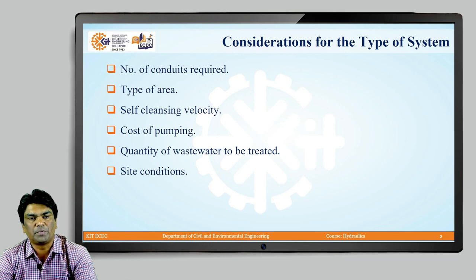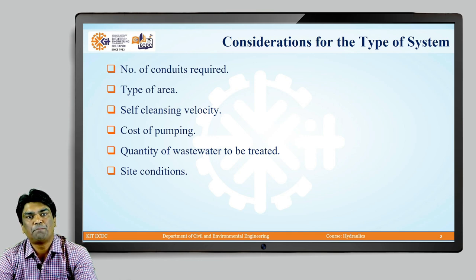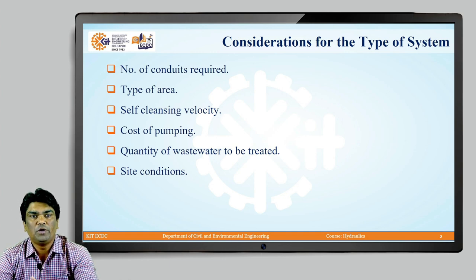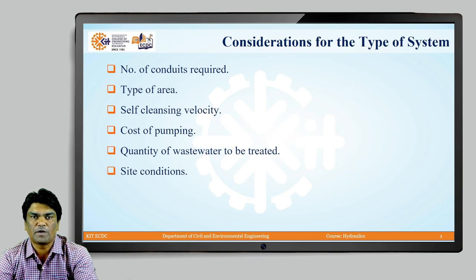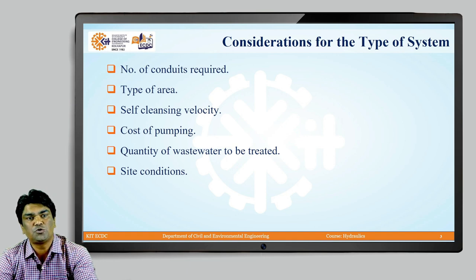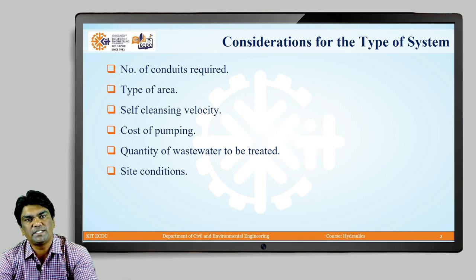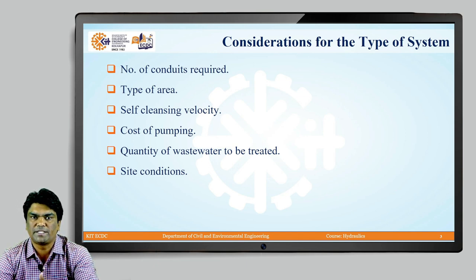The next consideration is cost of pumping. In a separate system, only sewage is required to be pumped to the sewage treatment plant. In case of combined sewers, both sanitary sewage and storm water must be pumped, so the quantity of flow required to be pumped is more. That is why the cost of pumping in case of combined sewers is more than in case of separate sewers.